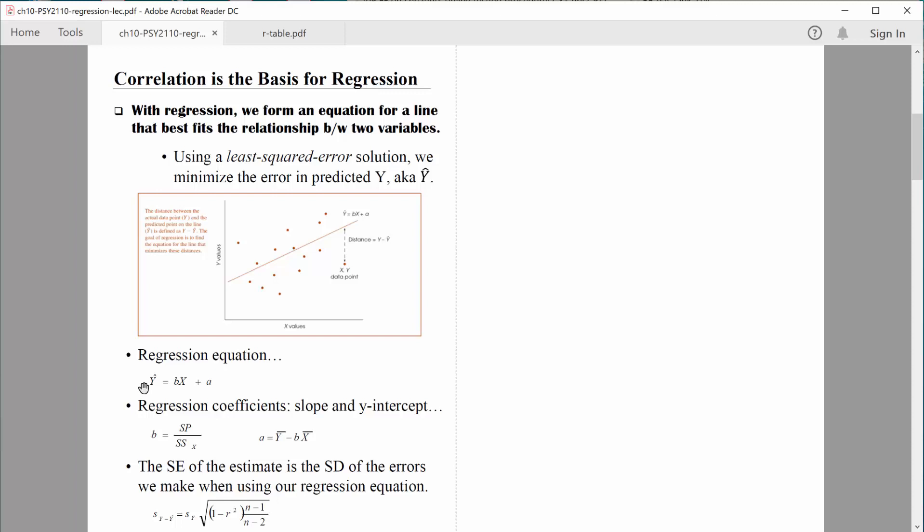Some people just refer to it as y hat because it looks like it's wearing a hat. It is predicted y. So predicted y is going to equal bx plus a. In other classes, even just like growing up through junior high, high school, you've probably worked on the equation for a line. That's exactly what that is right there. I remember having y equals mx plus b.